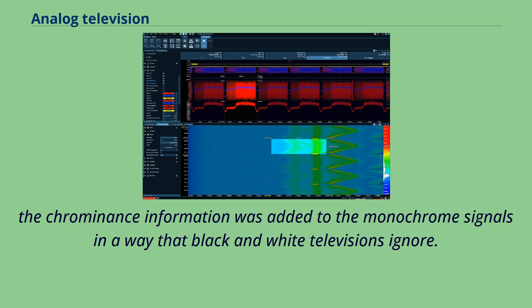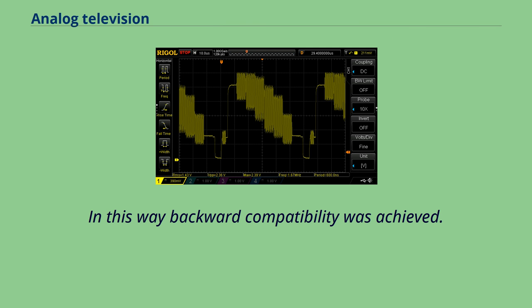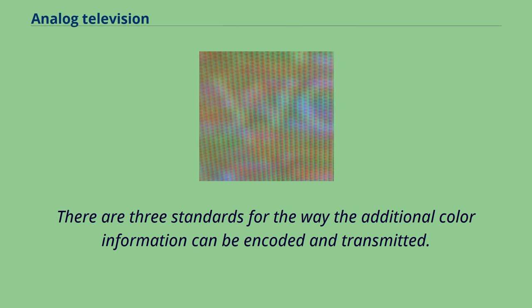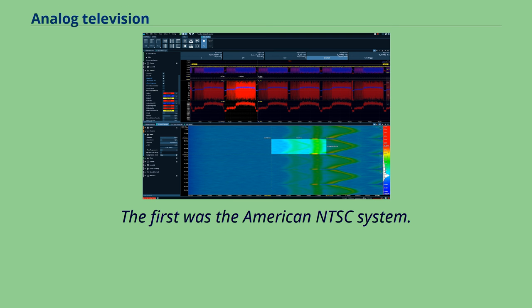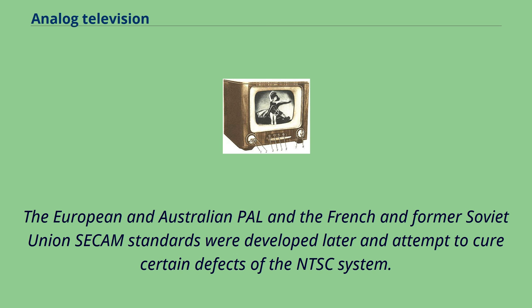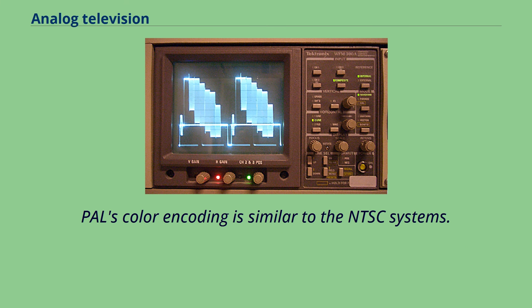There are three standards for the way the additional color information can be encoded and transmitted. The first was the American NTSC system. The European and Australian PAL and the French and former Soviet Union SECAM standards were developed later and attempt to cure certain defects of the NTSC system.